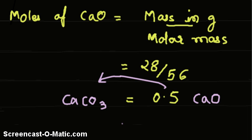Therefore, the answer is 0.5 moles of calcium carbonate. The next stage is to convert calcium carbonate to grams.